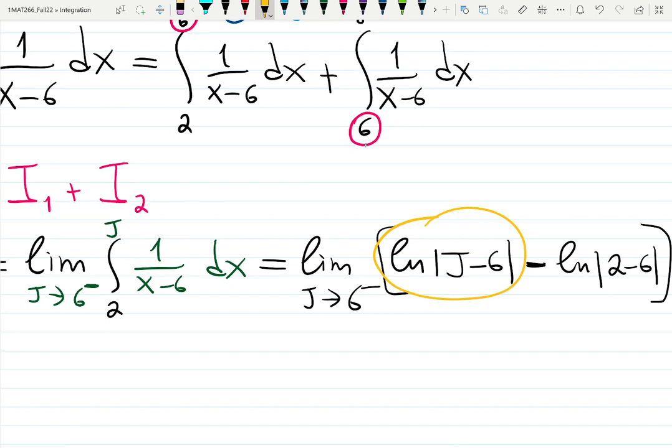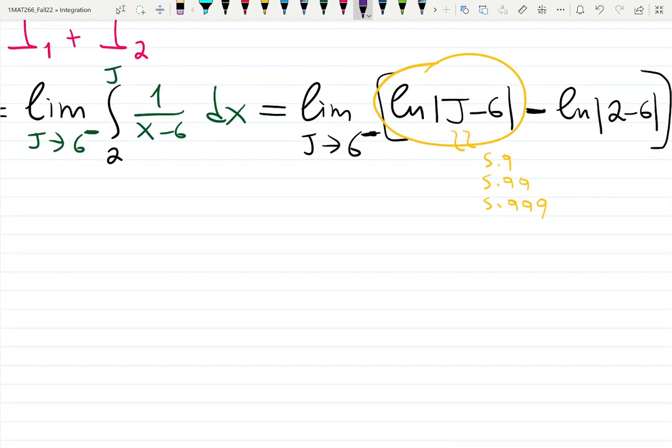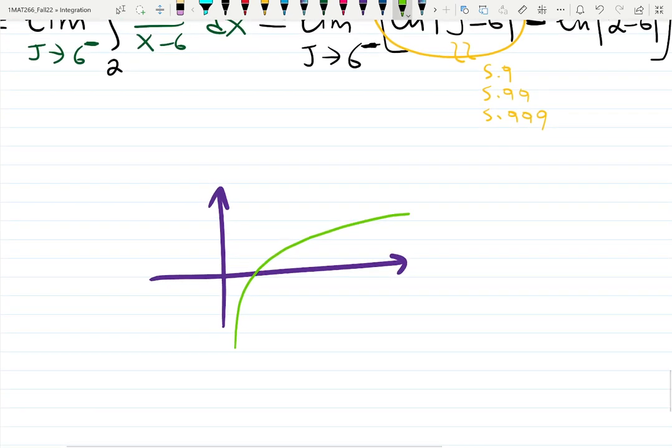And then it depends on the behavior of first of this situation, log of j minus 6. What is happening with j minus 6? 6 minus 6 is 0, but we're approaching 6 from the left. So j is actually 5.9, 5.99, 5.999, that number minus 6 is what? Tiny negative number. And then with absolute value becomes tiny positive number. So we need to know what does log do at the tiny numbers. Graph helps you with that.